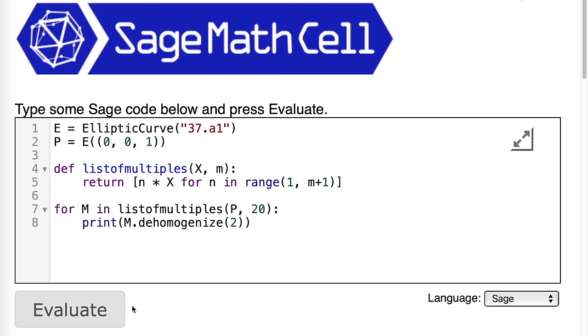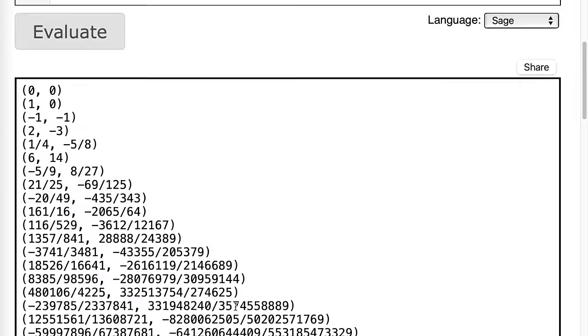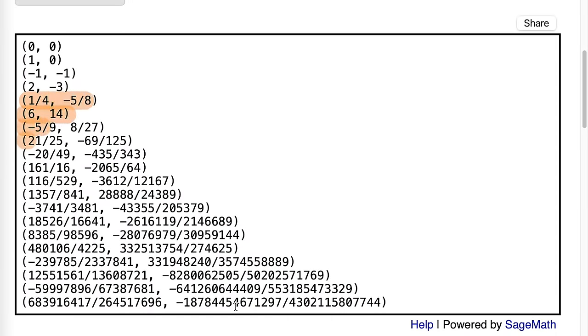With SAGE, we can do this a lot faster. Now, we don't know, but it seems plausible that A is a point of infinite order.